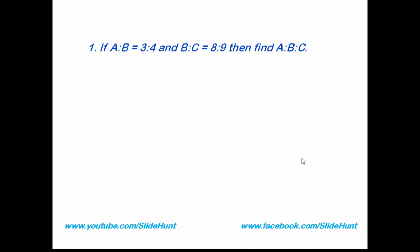Question number 1: If A is to B equals 3 is to 4, and B is to C equals 8 is to 9, then find A is to B is to C. You have to solve this problem within 10 seconds. It's a very common question. If you see the previous year question paper, then of course you will find it.